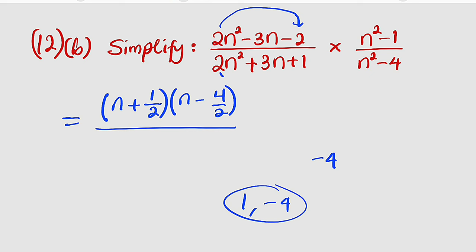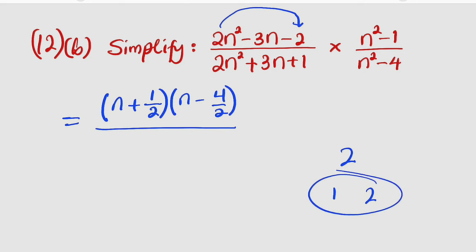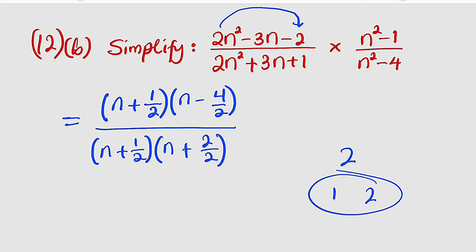We do the same for the next expression: take the leading coefficient and multiply by the constant, giving 2 × 1 = 2. We need two numbers that multiply to 2 and add to 3 — those are 1 and 2. So this factorizes as (n + 1) divided by the leading coefficient, multiplied by (n + 2) divided by the leading coefficient. Then we multiply by the other expression.